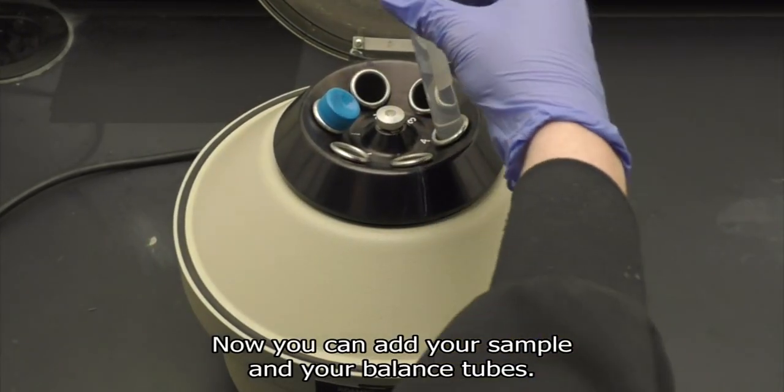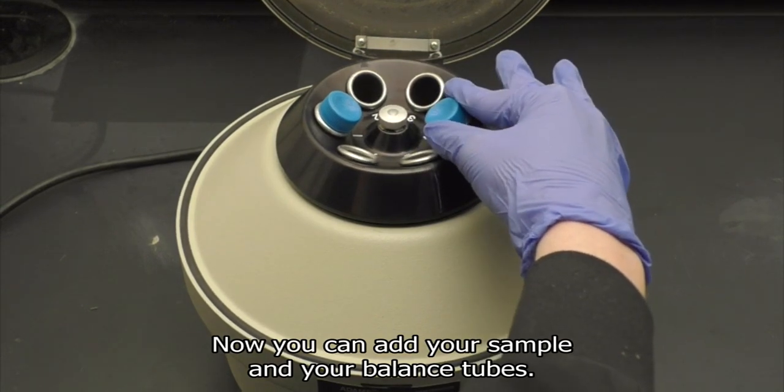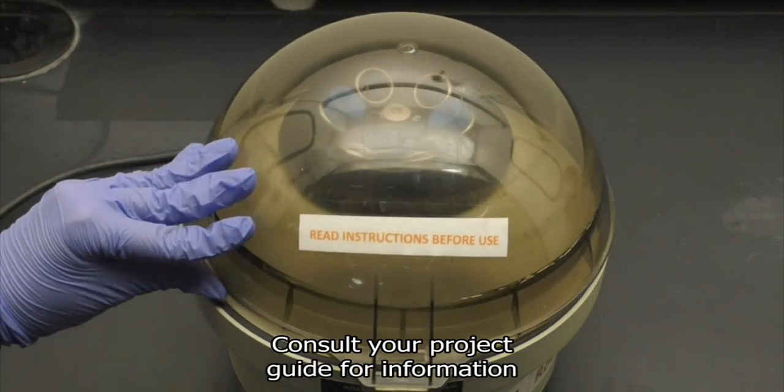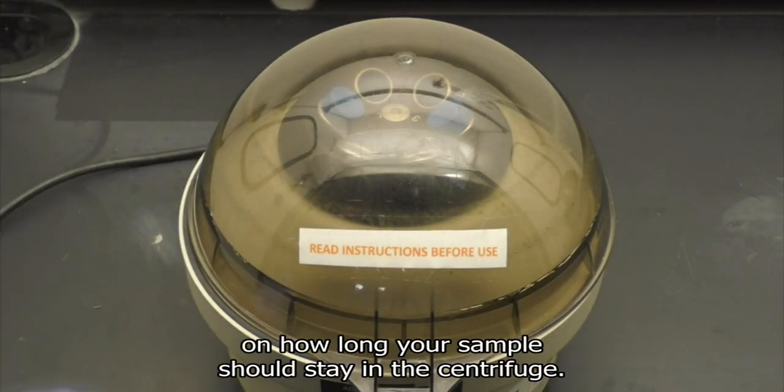Now you can add your sample and your balance tubes to the rotor. Shut the safety cover and move the toggle switch into the on position. Consult your project guide for more information on how long your sample should stay in the centrifuge.